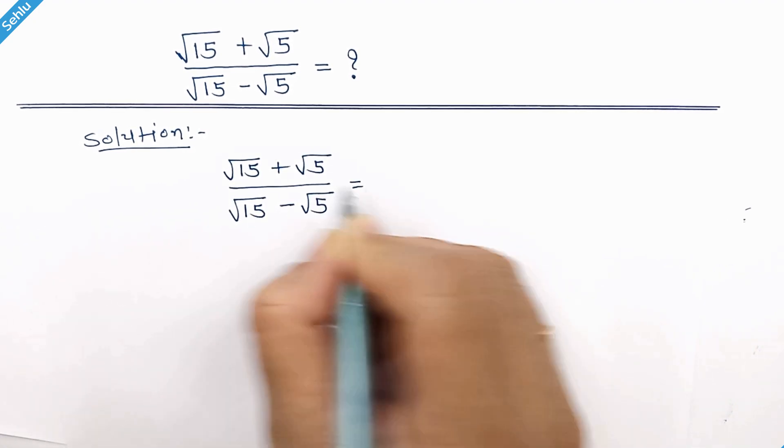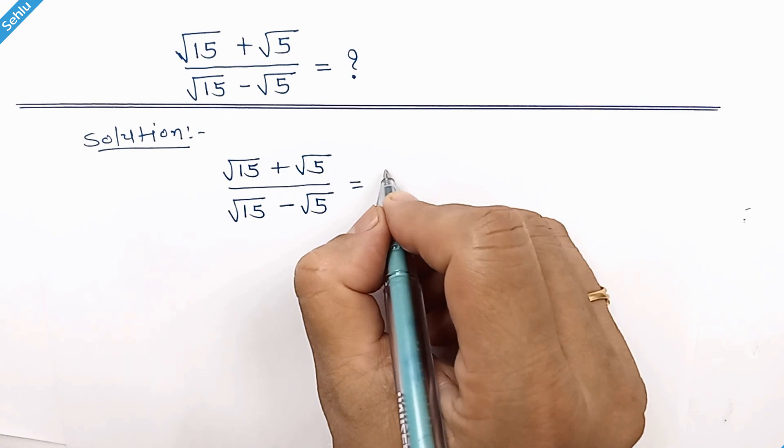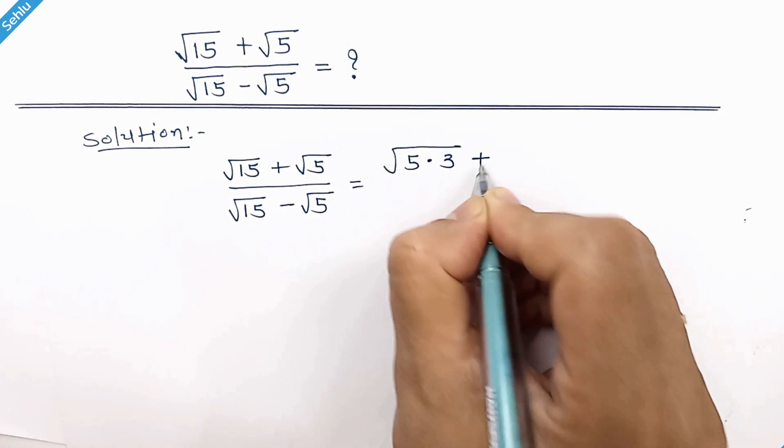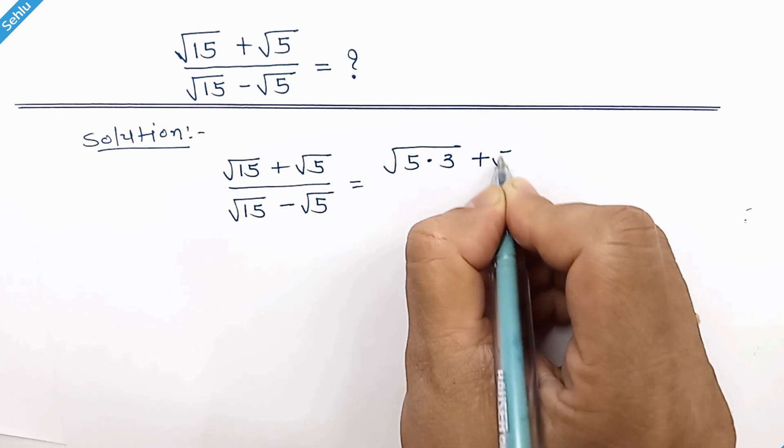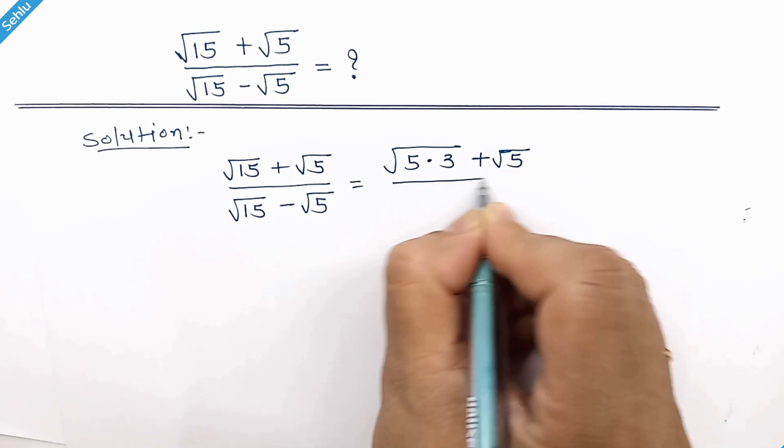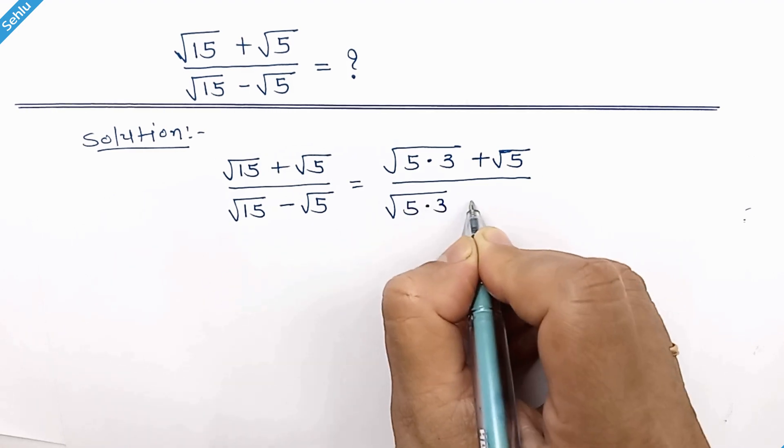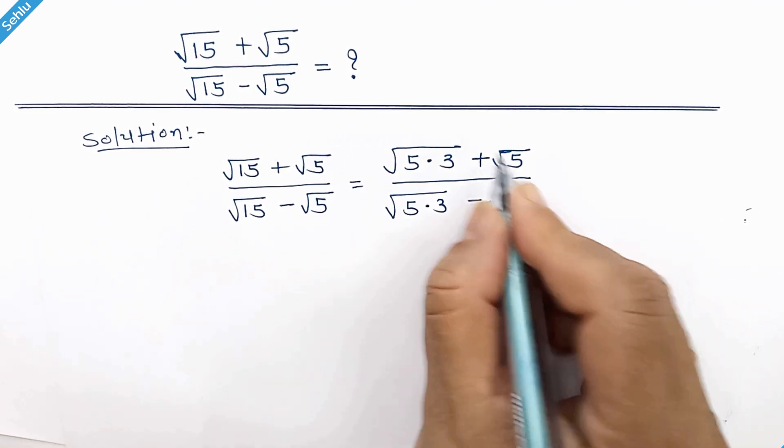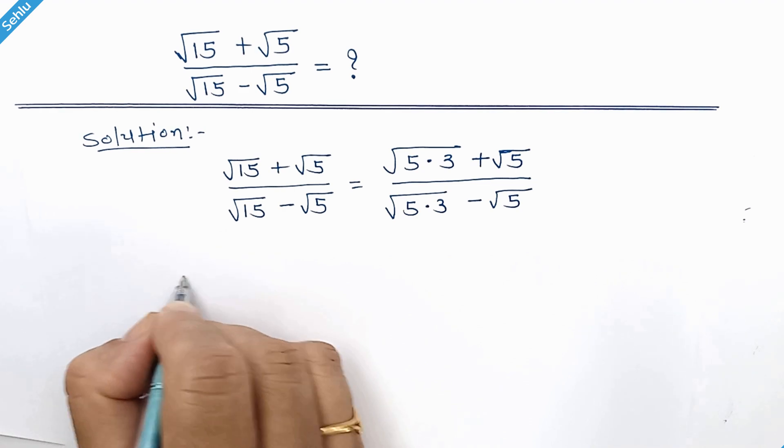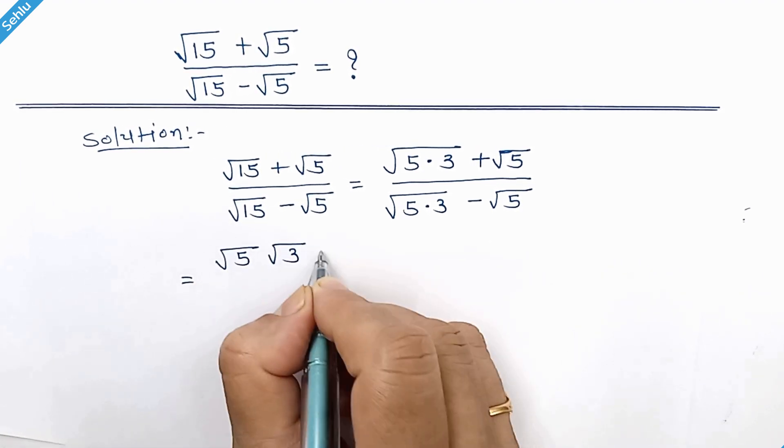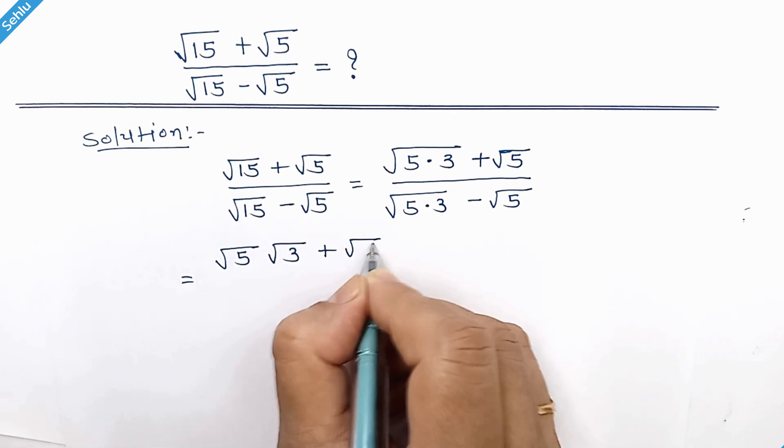15 can be written as 5 times 3. Now this can be written as square root 5 times square root 3 plus square root 5.